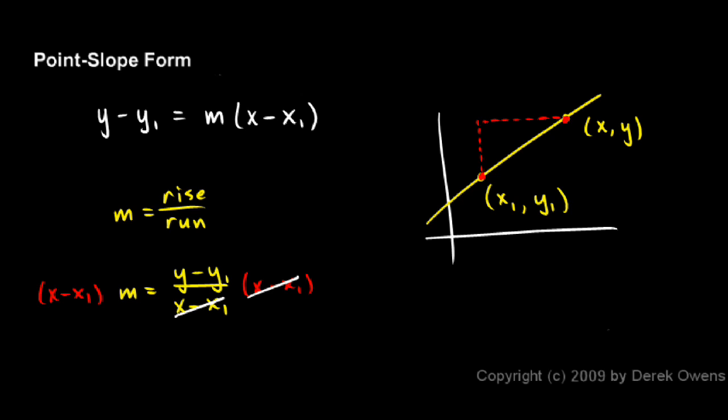It's called point-slope form because it's useful when we're given a point, x1, y1, and the slope of the line. We'll look at some examples with this.